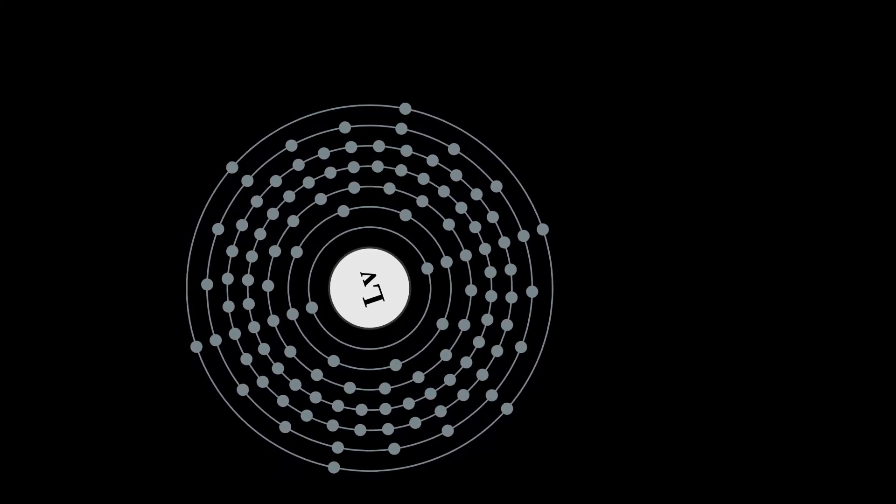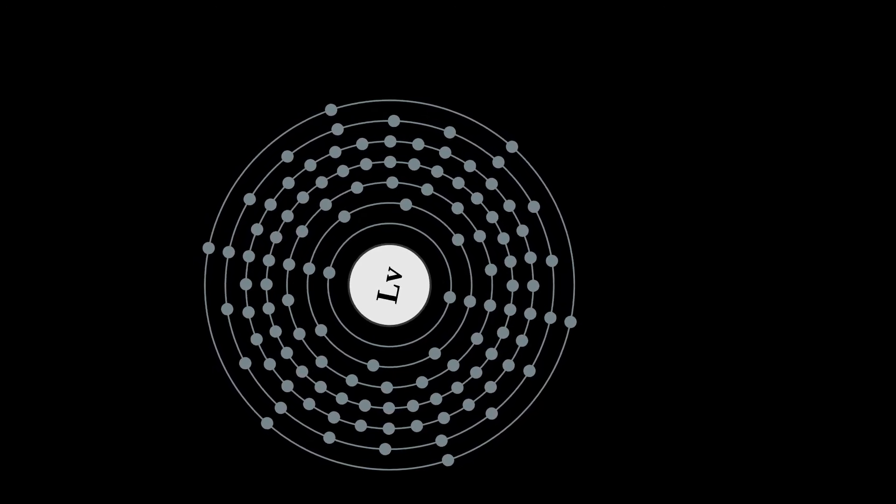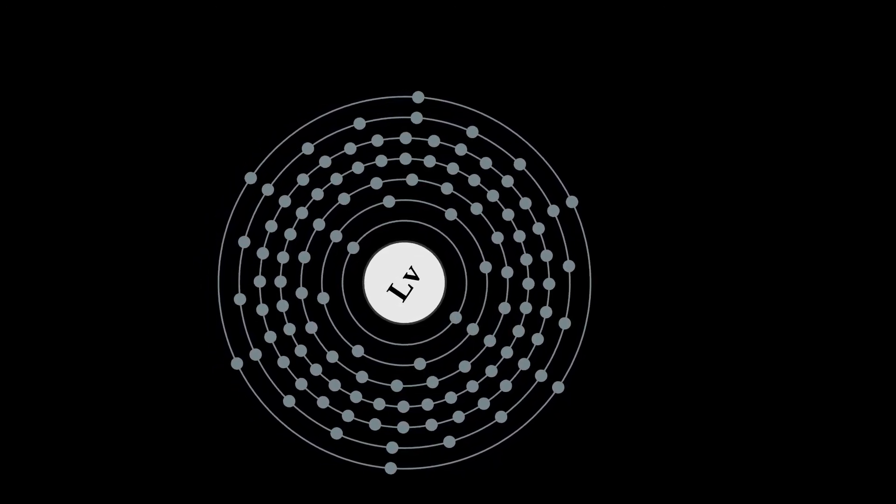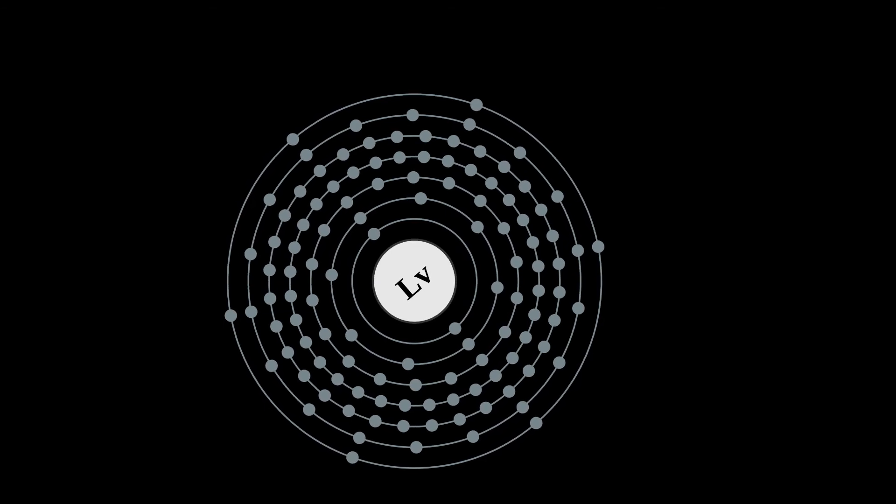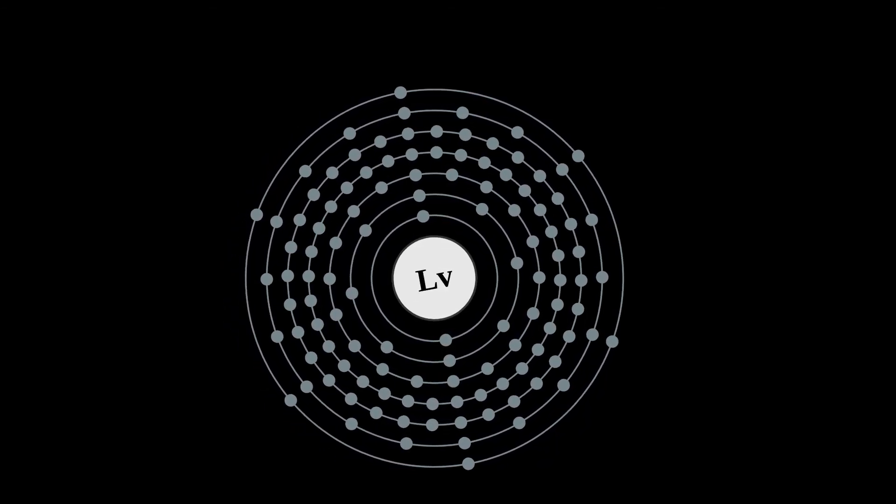Livermorium is calculated to have some similar properties to its lighter homologues - oxygen, sulfur, selenium, tellurium, and polonium - and be a post-transition metal, although it should also show several major differences from them.